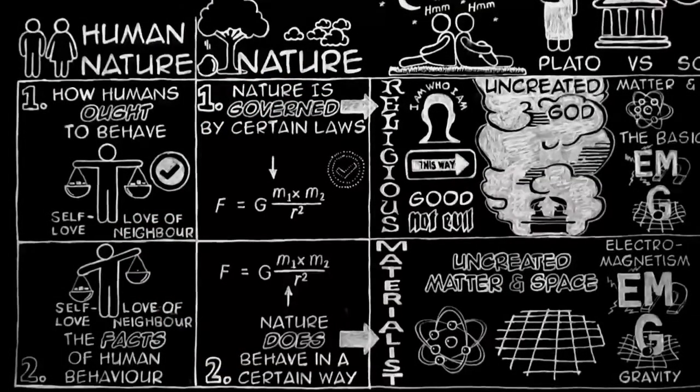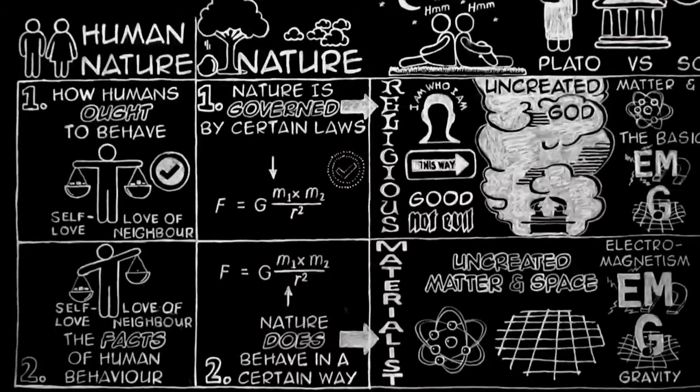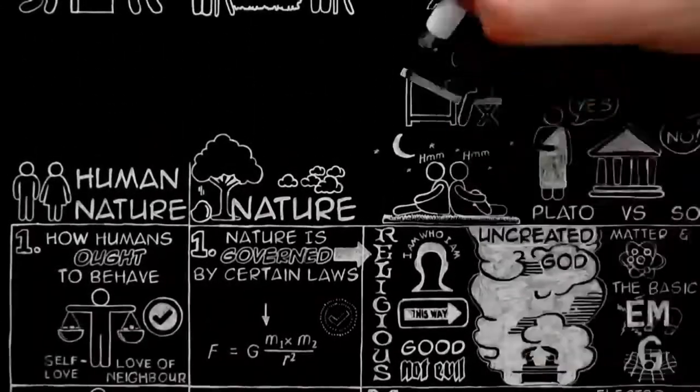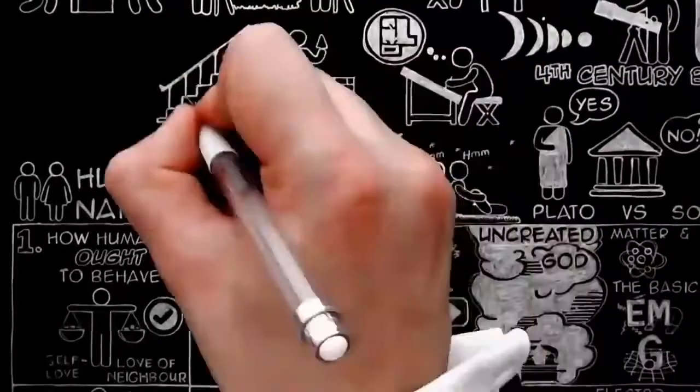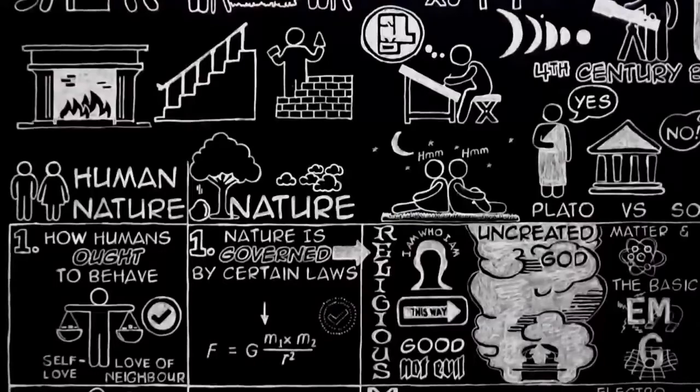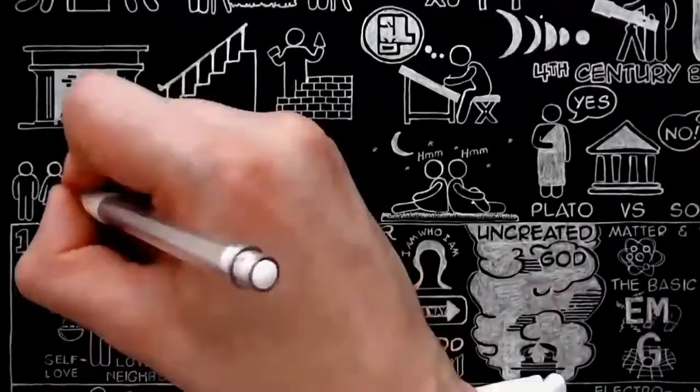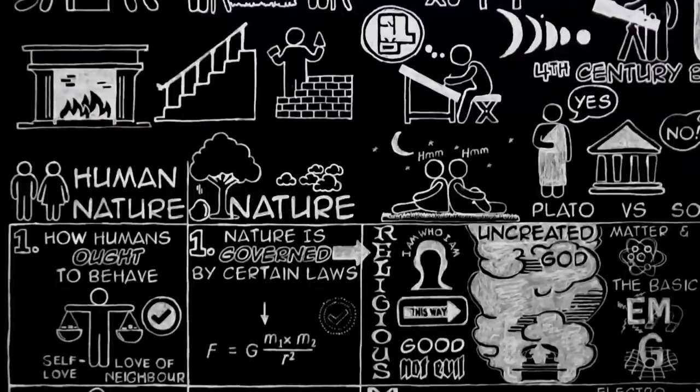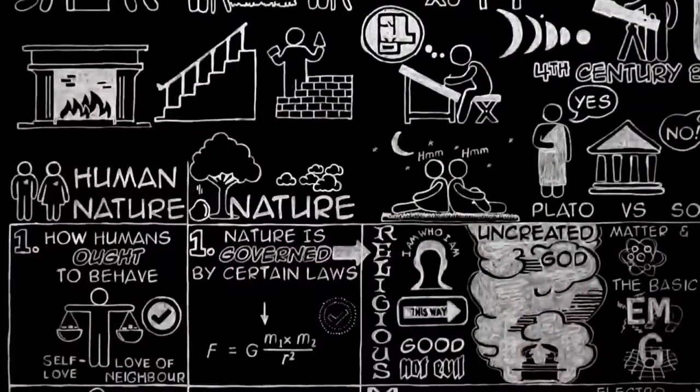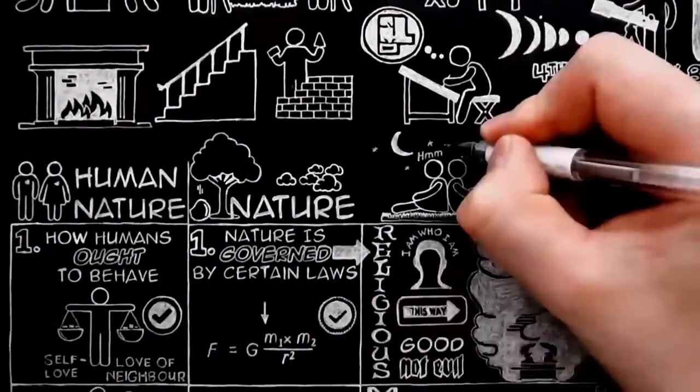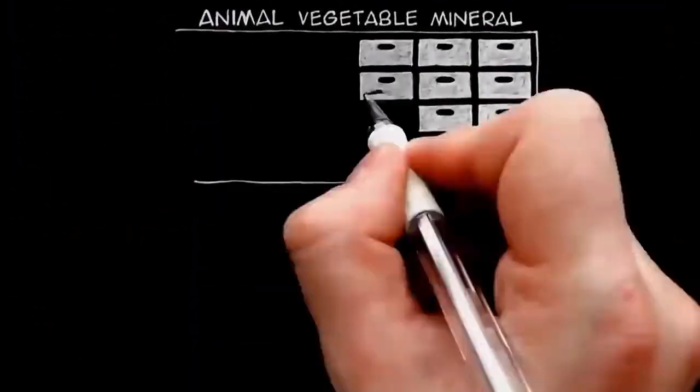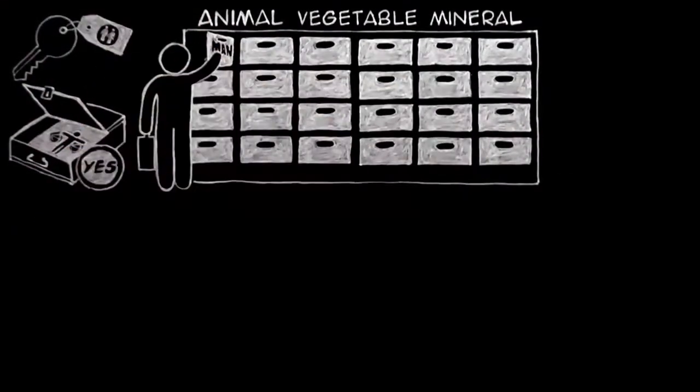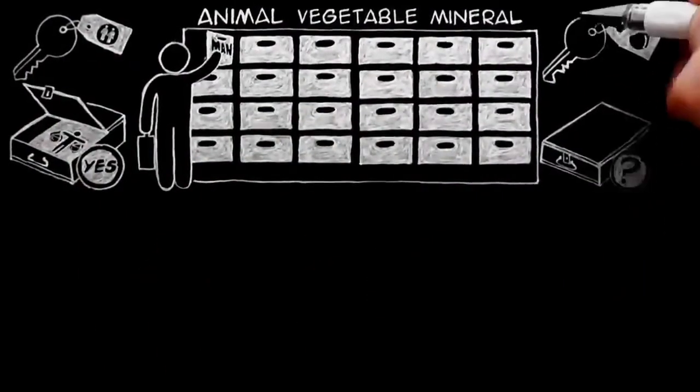Or put it the other way round. If there was a controlling power outside the universe, it could not show itself to us as one of the facts inside the universe, no more than the architect of a house could actually be a wall or staircase or fireplace in that house. The only way in which we could expect it to show itself would be inside ourselves, as an influence or a command, trying to get us to behave in a certain way. And that is just what we do find inside ourselves. Surely this ought to arouse our suspicions. In the only case where you can expect to get an answer, the answer turns out to be yes. And in the other cases where you do not get an answer, you see why you do not.